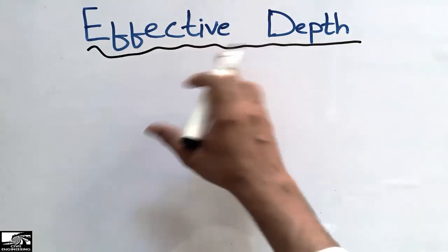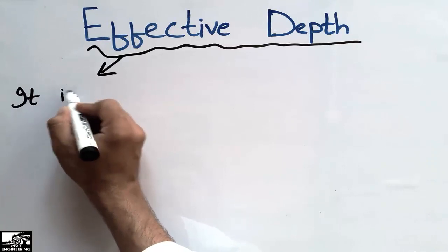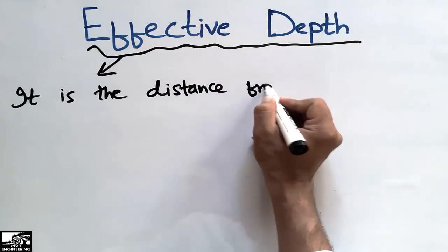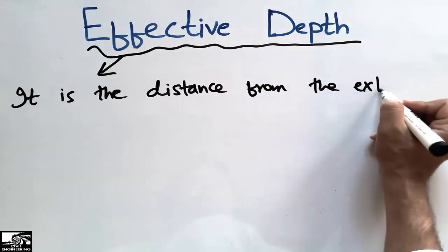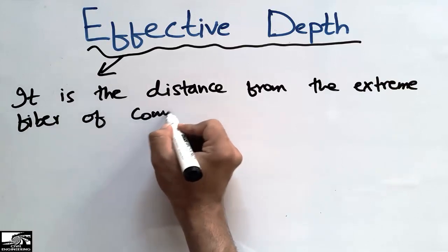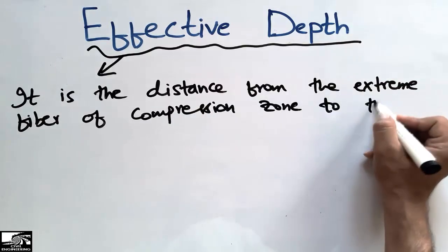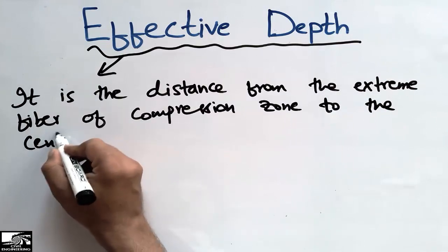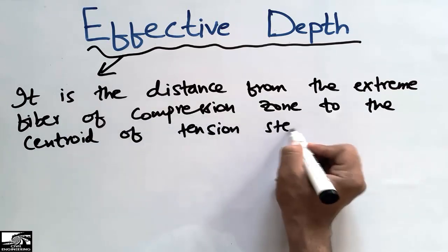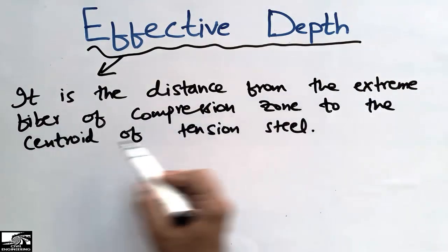We will discuss the method of how we calculate the effective depth of any beam or slab section. First, to define the effective depth: it is the distance from the extreme fiber of the compression zone to the centroid of the tension steel.